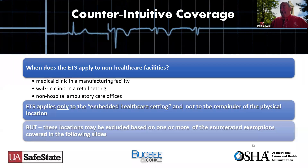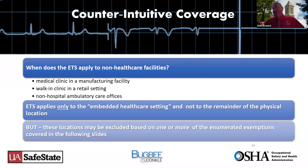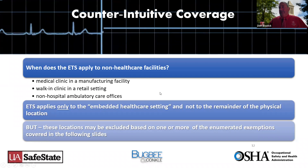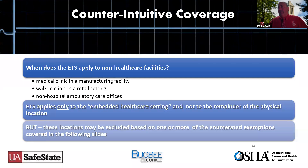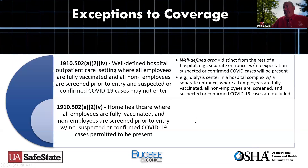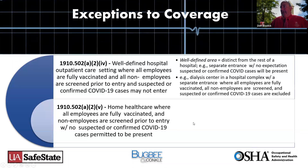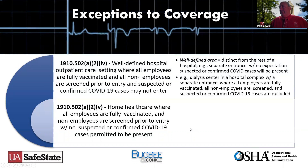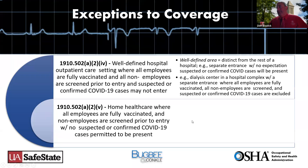Walk-in clinics in a retail setting and non-hospital ambulatory care are also specified. The ETS only applies to the embedded healthcare setting and not the remainder of the physical location. Manufacturers worried about having a healthcare clinic — these locations may be excluded based on one of the exemptions covered in 1910.502(A)(2-4). A well-defined area is distinct from the rest of the hospital or facility with no expectations of confirmed COVID-19 cases present. An example would be a dialysis center in a hospital complex that is totally separate, where all are fully immunized and screened.